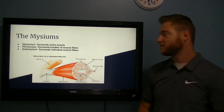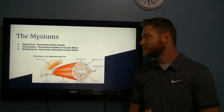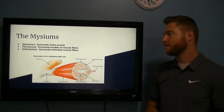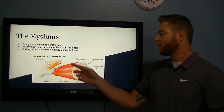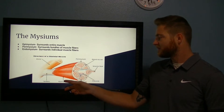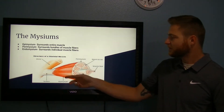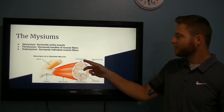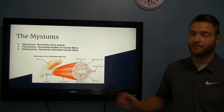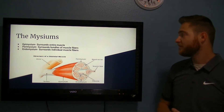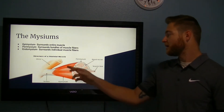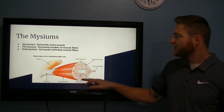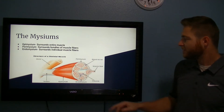The myosome has three parts: the epimyosome, perimyosome, and endomyosome. The epimyosome just covers your whole muscle. The perimyosome surrounds bundles of muscle fibers. And then the endomyosome surrounds individual muscle fibers.